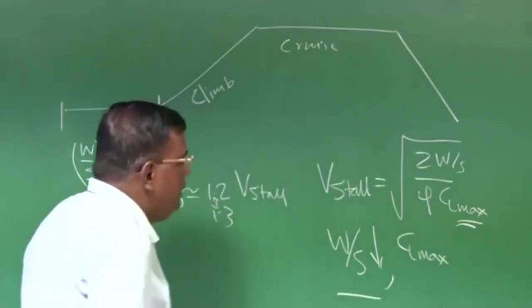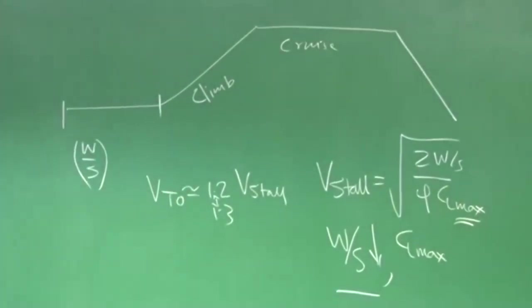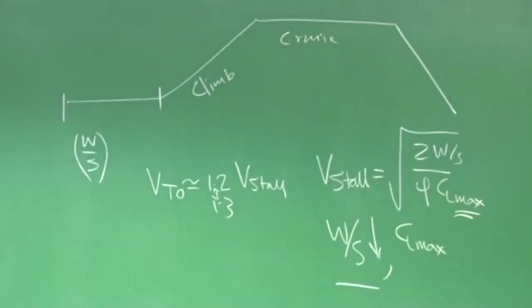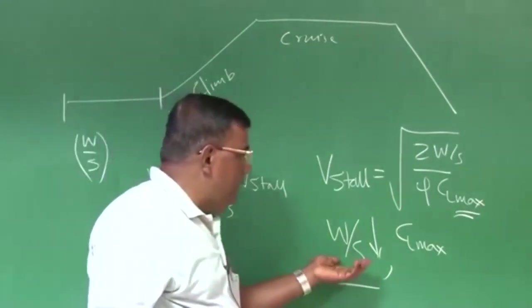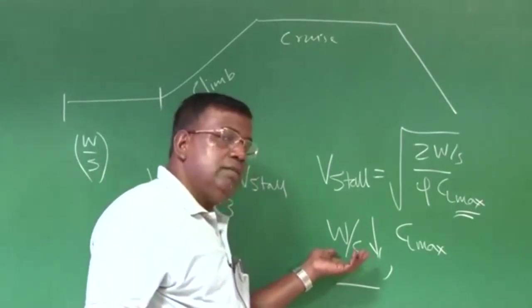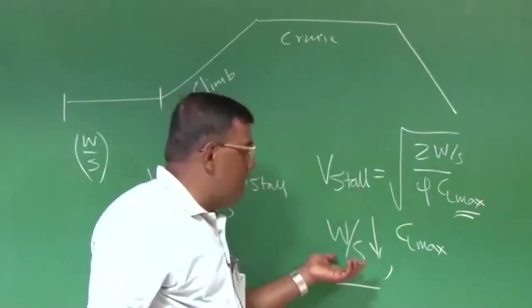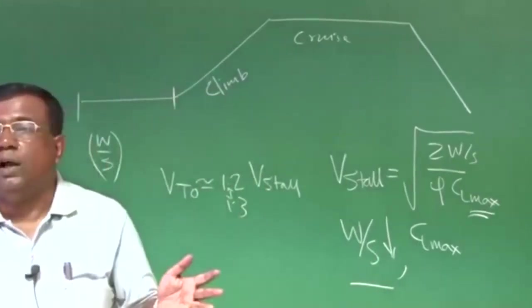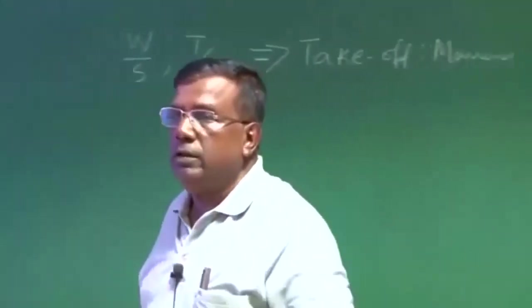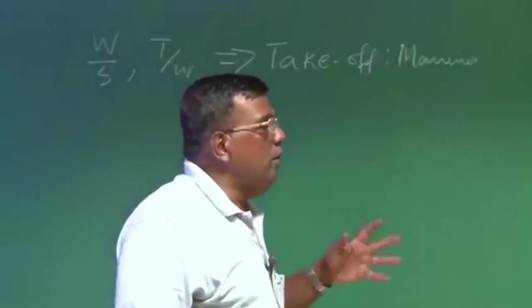Once I try to decrease W by S, once I try to decrease wing loading, that effectively means I want larger wing area, right? And larger wing area, although it will give you a lesser wing loading so V stall will be less, but larger wing area means larger drag, so you need more power. So you have to do a compromise.